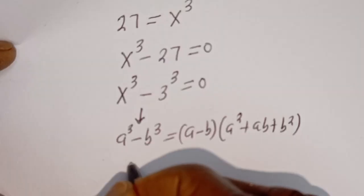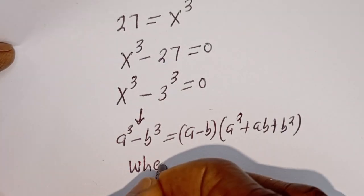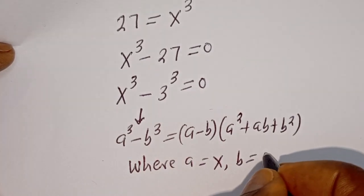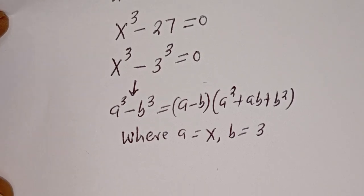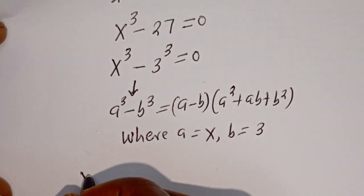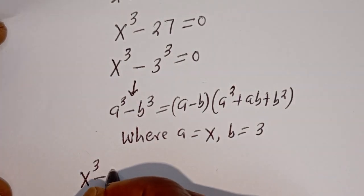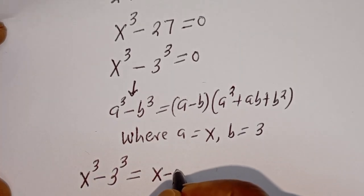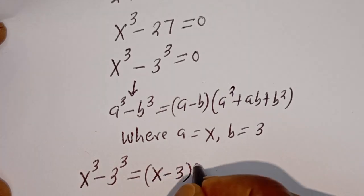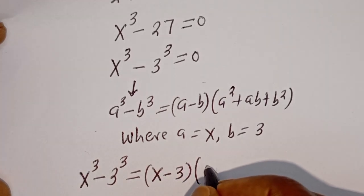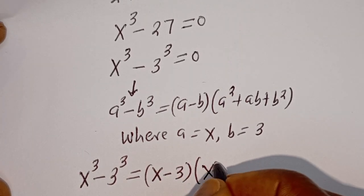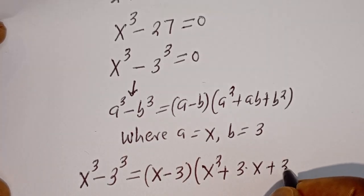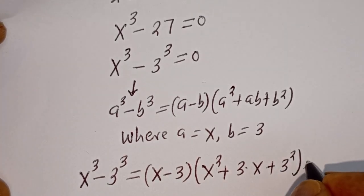Here where a is equal to s and b is equal to 3. From here we have s to the power of 3 minus 3 to the power of 3 is equal to (s minus 3)(s squared plus 3 multiplied by s plus 3 squared) equal to 0.